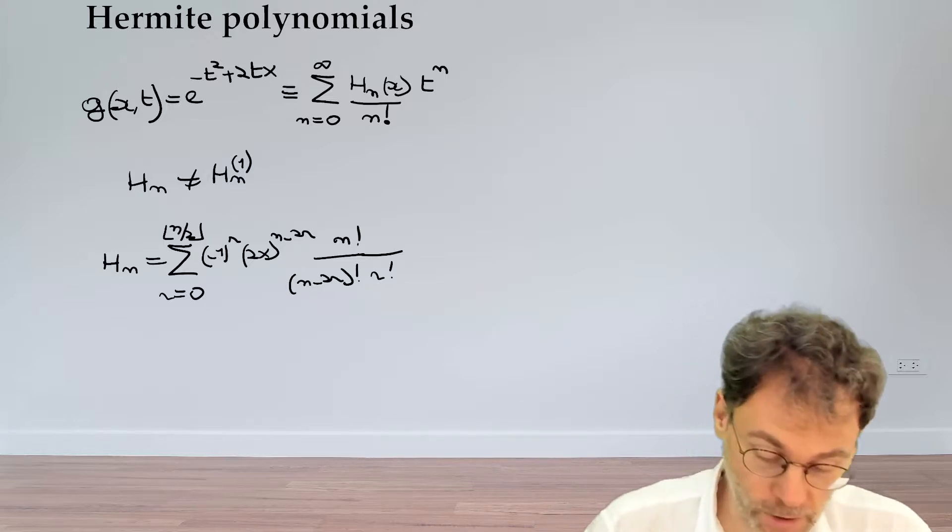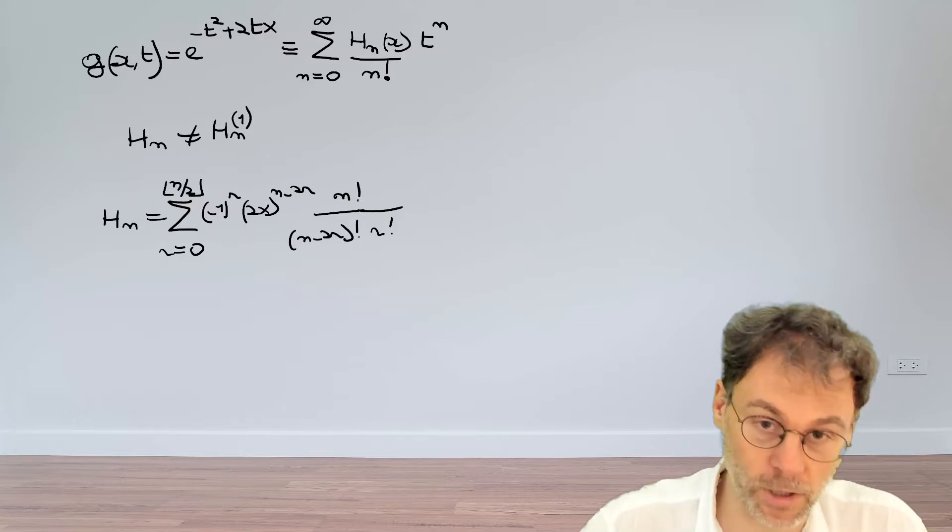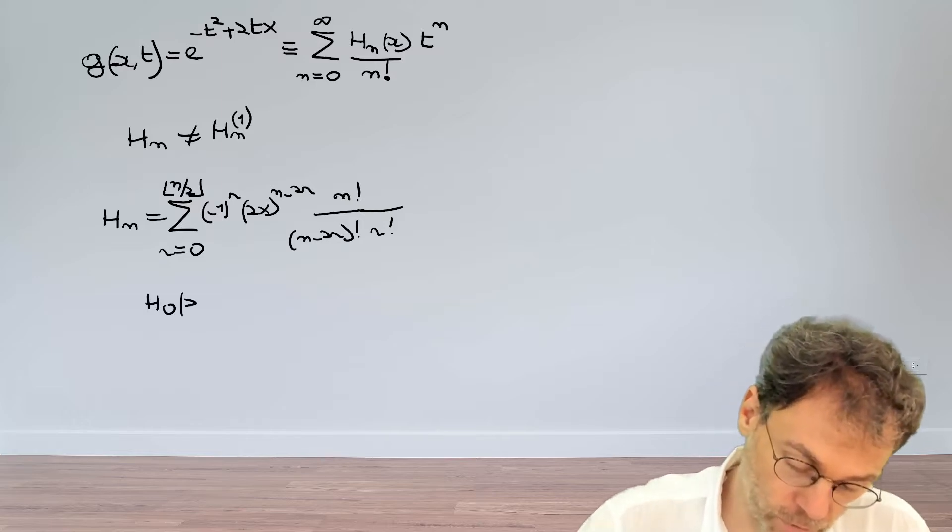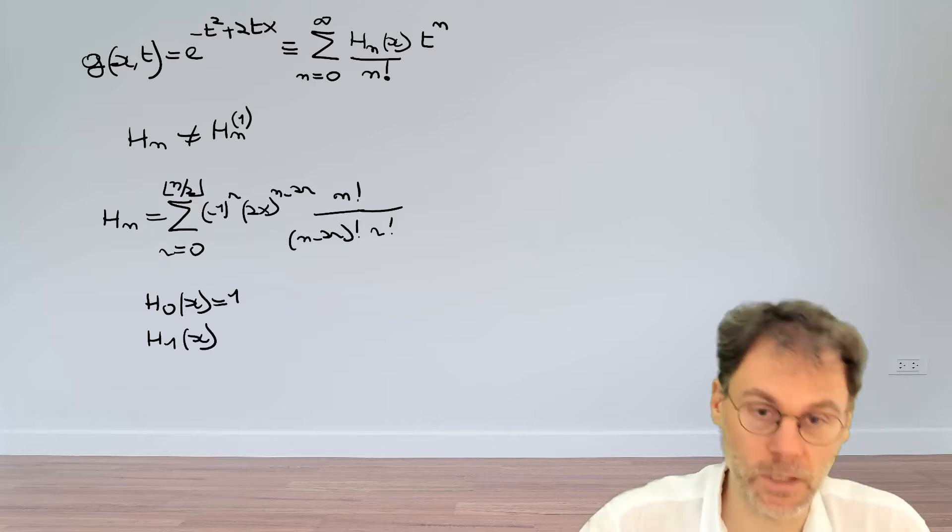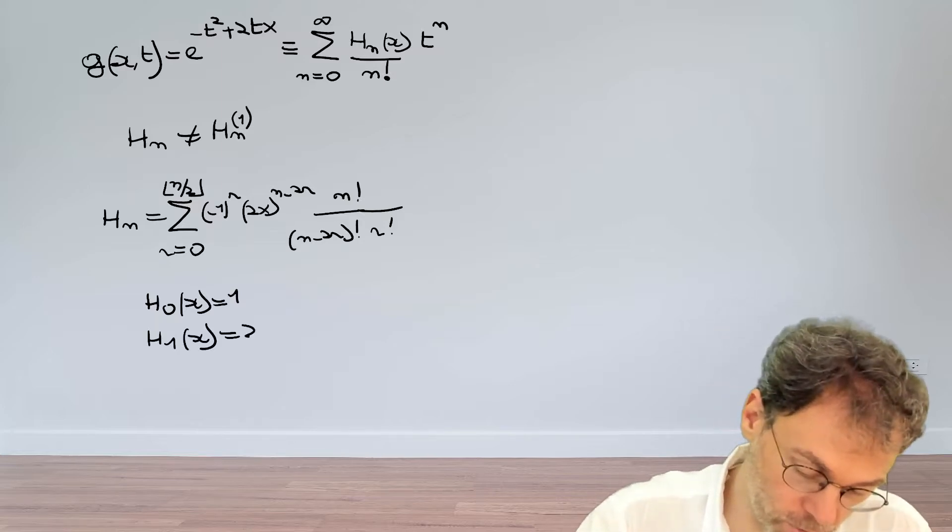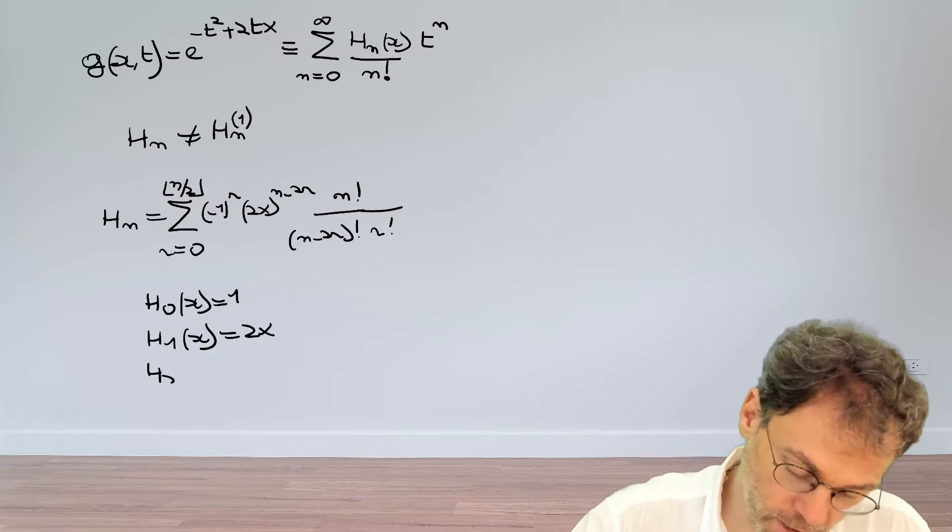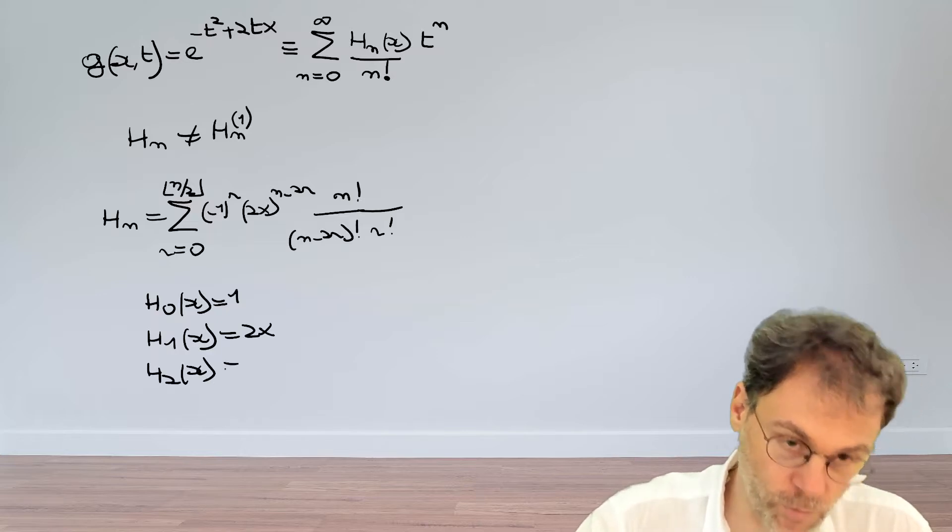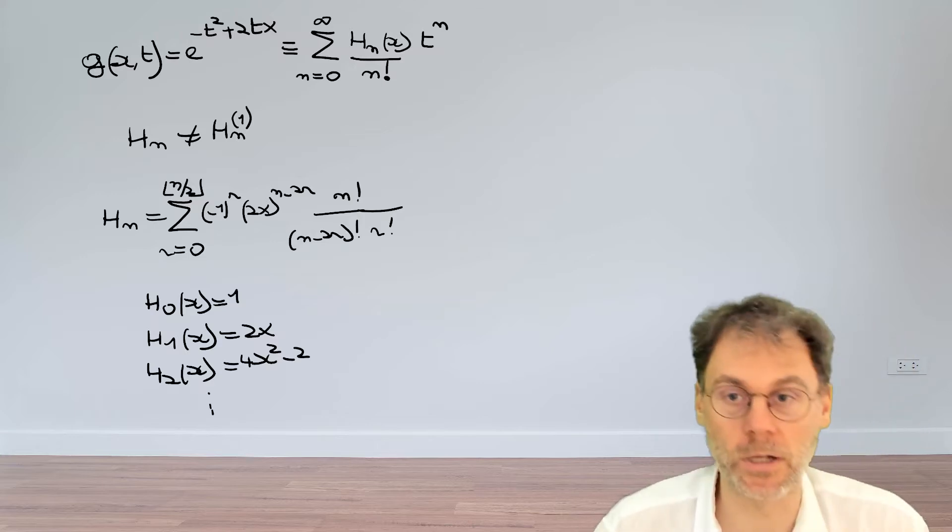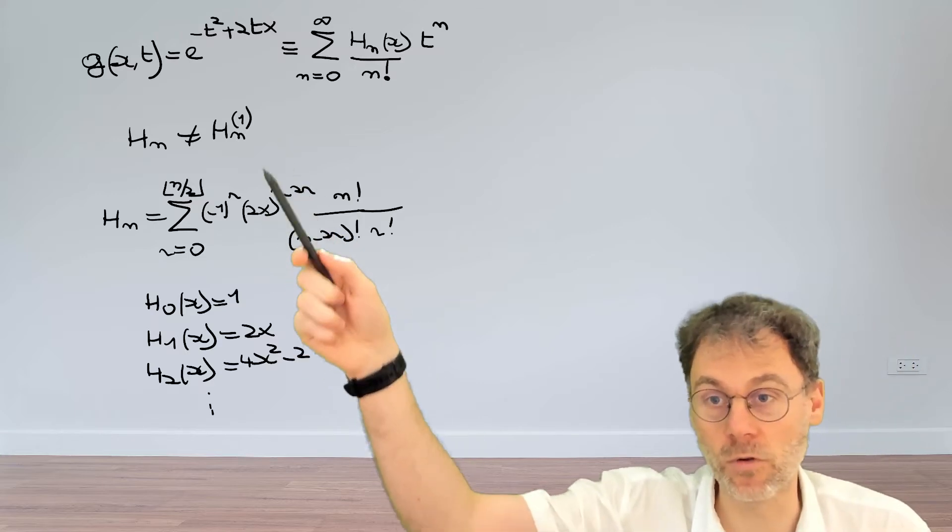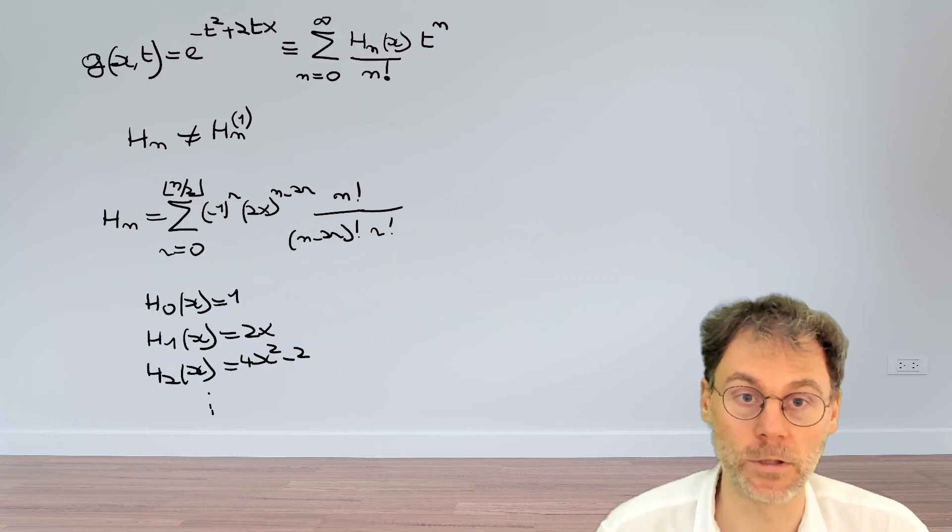Once you have this formula, then you can figure out that the Hermite polynomial of the zeroth order is just a constant. If you go to the first order Hermite polynomial, that turns out to be 2x. The second order Hermite polynomial is 4x squared minus 2, and so on and so forth. So using this formula, you can actually calculate all Hermite polynomials.